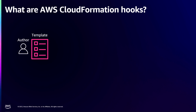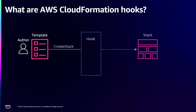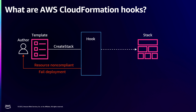In practice, an author of a CloudFormation template makes a create stack call. CloudFormation hooks intercept that call and invoke a Lambda function. This hook is essentially a Lambda function that returns a compliant or non-compliant result for each resource of the configured resource type. If any resource is non-compliant, the create stack call fails and your stack rolls back. If all resources are compliant, the create stack call succeeds and your stack is deployed to your environment.